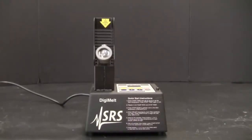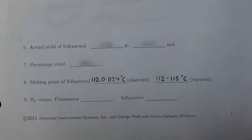To determine melting point, we will be using the SRS Digimelt. This device allows us to determine the melting point range of a solid. The melting point of a substance is always given as a range.